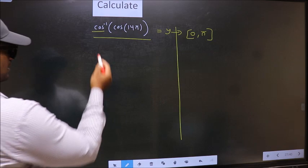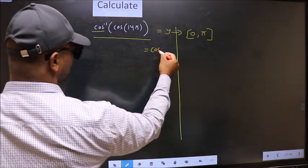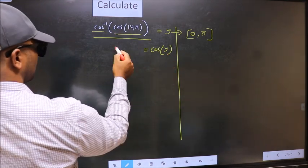Next, shift cos inverse to the other side. It will become cos y and this no change.